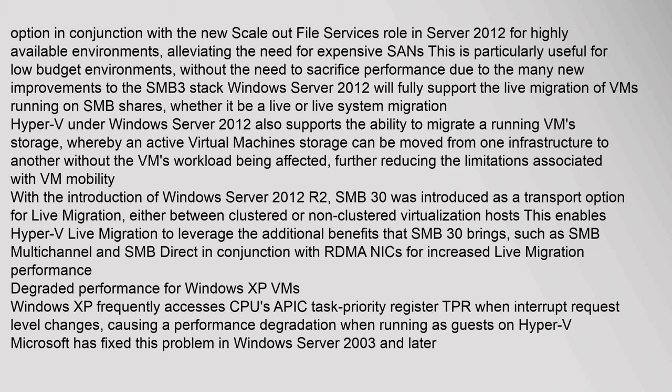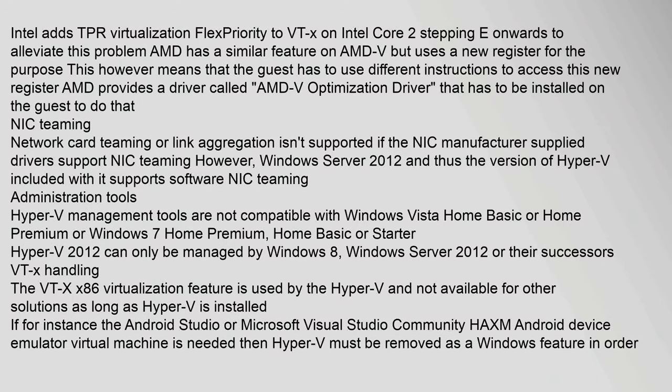Windows XP frequently accesses the CPU's APIC Task Priority Register (TPR) when interrupt request level changes, causing a performance degradation when running as a guest on Hyper-V. Microsoft has fixed this problem in Windows Server 2003 and later. Intel adds TPR virtualization (flex priority) to VT-x on Intel Core 2 stepping E onwards. AMD has a similar feature on AMD-V but uses a new register for the purpose, requiring a driver called AMD-V Optimization Driver to be installed on the guest. NIC teaming or link aggregation is not supported natively, but Windows Server 2012's version of Hyper-V supports software NIC teaming.